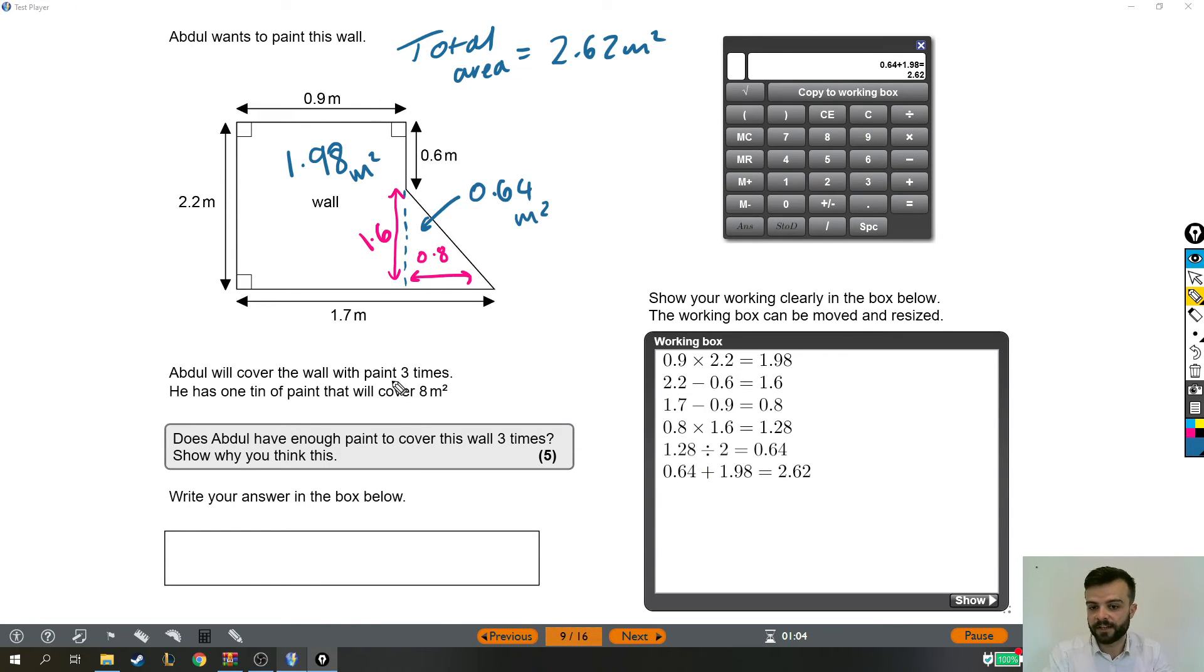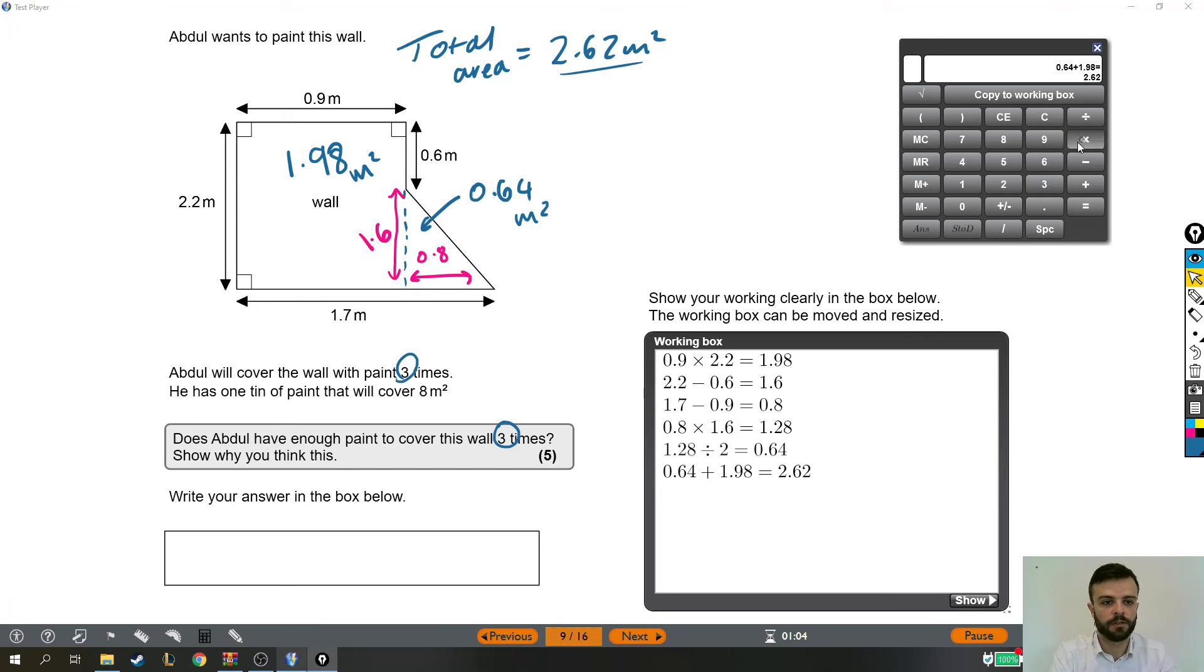But don't forget, he did say, it said in the question a couple of times because he doesn't want you to miss it, that he's going to paint the wall three times. So that's how much it would cost, that's how much it will take to paint it once. That's the area of the wall when you've painted it once. But he paints the wall three times, so he's going to need to cover that wall three times. We multiply by 3. This times 3 equals, that is how much paint he's going to need. Because it's the area of the wall which he's going to paint once, twice, three times. So that's how much paint he's going to need to cover the wall three times.